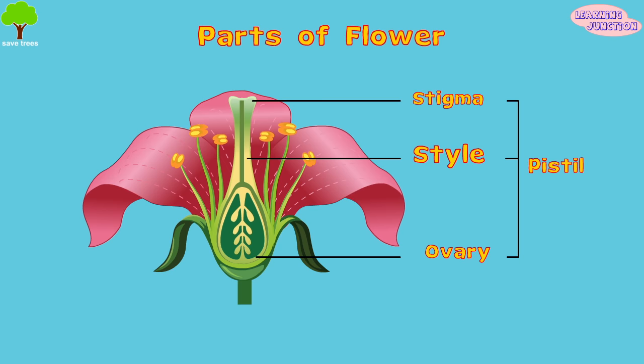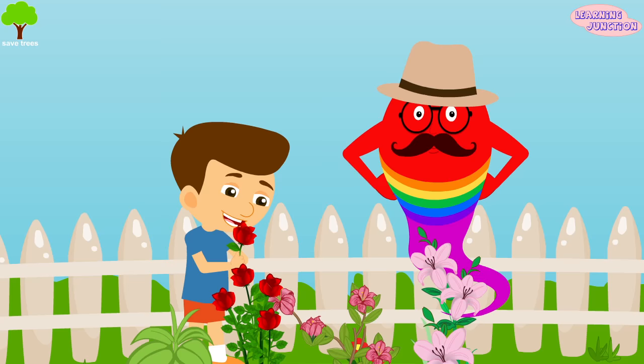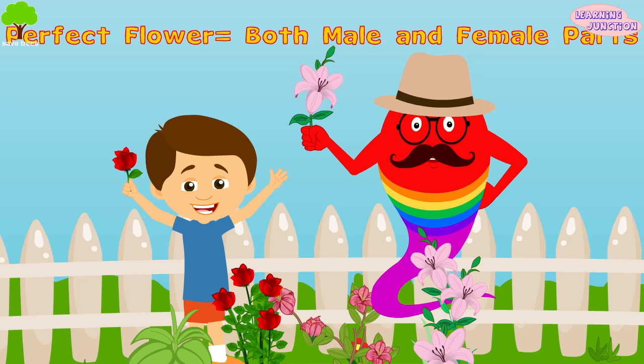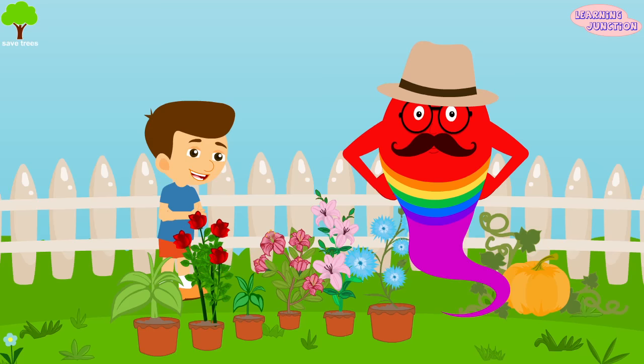Style: the long stalk upon which the stigma rests. Ovary: the base of the pistil at the bottom of the flower. And the ovules — these are the flower's eggs.